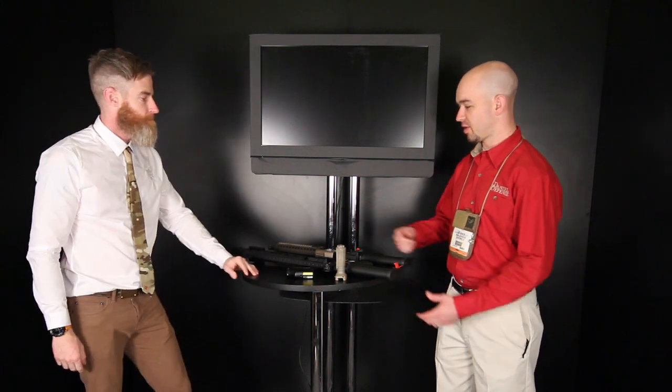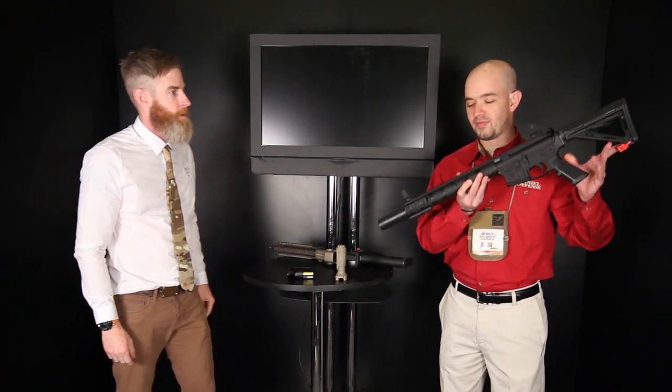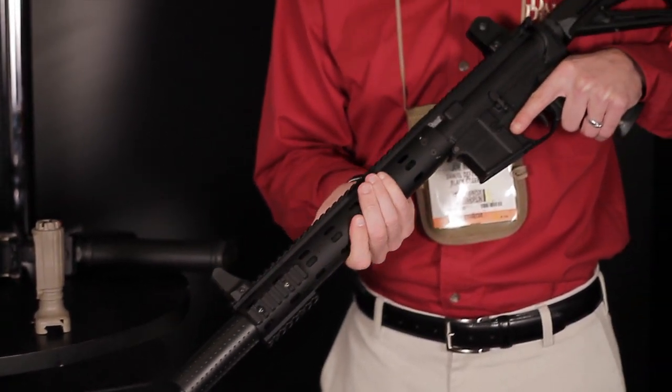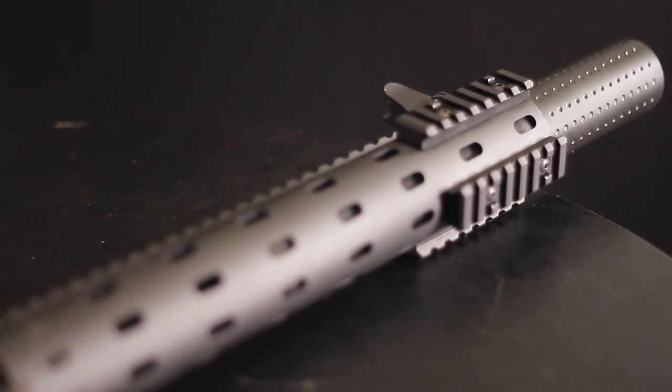So you've got some really cool stuff. We're going to start off with what you've got for SHOT Show this year. Sure. Something we're all really excited about is the new Daniel Defense ISR. It's an integrally suppressed 300 blackout. The overall barrel length is 16 inches.